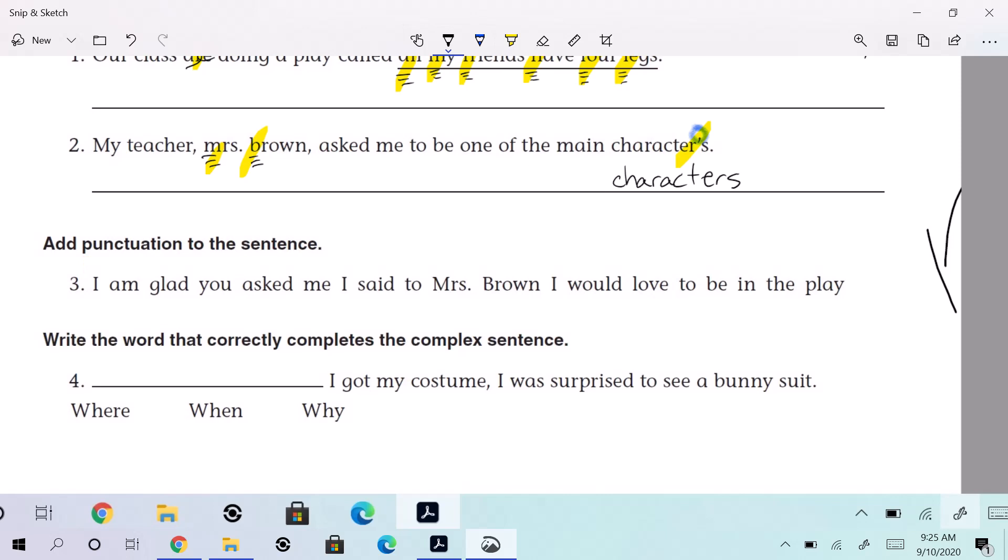So why don't we do that? So it says, I am glad you asked me. That's something that someone said, right? I am glad you asked me. Comma. I am glad you asked me, comma. I said to Mrs. Brown. Guess what? The I said to Mrs. Brown. This is the tagline. Why is it a tagline? It tells who's speaking. Who's speaking? I am, right? I said to Mrs. Brown. And guess what we need after the tagline? If it's in the middle of the sentence, we need another comma, right? Comma.